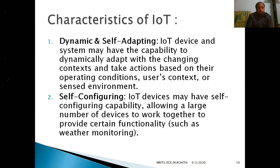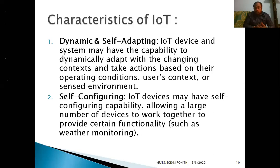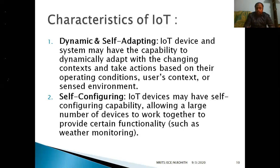We have a total of five characteristics. The first one is dynamic and self-adaptable. If you design an IoT device or system, it should be ready to adapt to the environment dynamically. For example, an environment monitoring device: today it will be rainy, tomorrow very hot, the day after very cold. Depending upon the environmental changes, the device should be ready to give information about what the environment is providing.